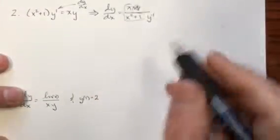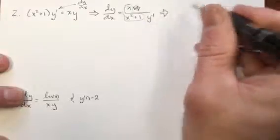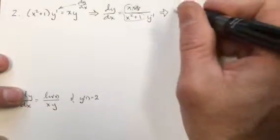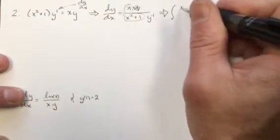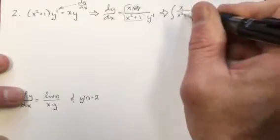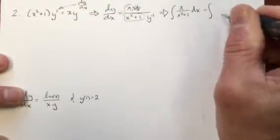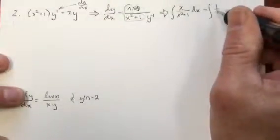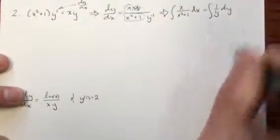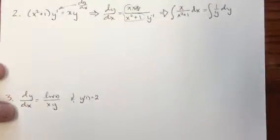if we think of this as just being multiplied by that, so this becomes then the integral of x over x squared plus 1 dx equals then the integral of 1 over y dy. So now it's just a matter of integrating those.